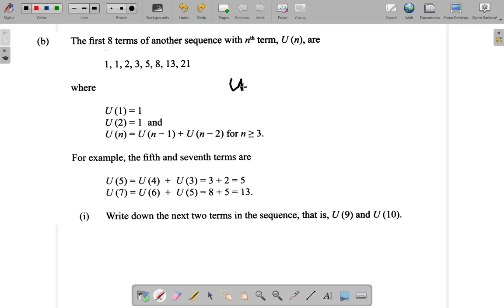So U(9) would be... U(n) = U(n-1) + U(n-2), so U(9) would be U(n-1) plus U(n-2). U9, in this case U(n-2). So this is U(8) plus U(7), because 9-1 is 8, 9-2 is 7.